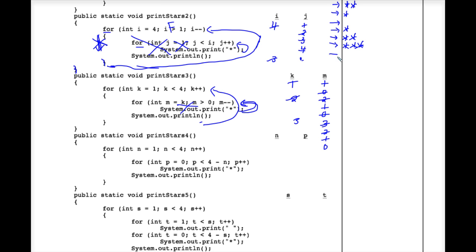We come back up to the outer for loop and k++. We check the control expression: k is 4. Is 4 less than 4? No, it's not — that's false. So we don't go through this outer loop again and we're finished. We just executed the method print_stars_3. We travel back up to the main method, execute system.out.println, dropping the cursor to another line, and we're ready to execute print_stars_4.